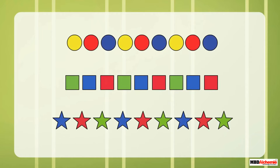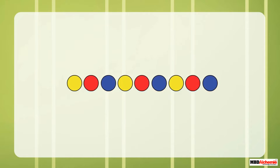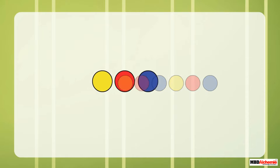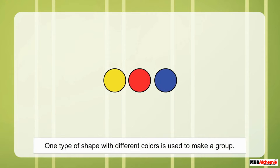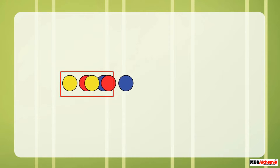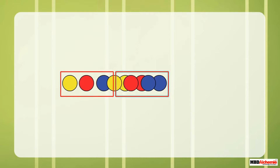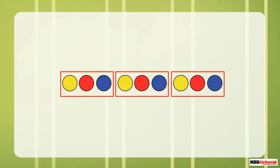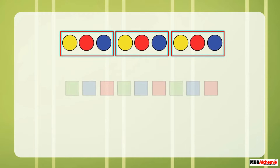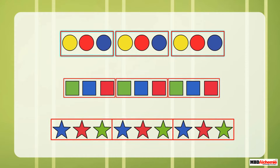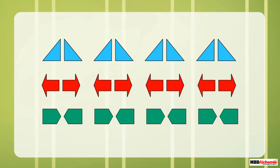Let us see some more patterns formed by colors. Look at this pattern — here one type of shape with different colors is used to make a group, and this group is repeated to make a pattern. Similarly, we have these two patterns.